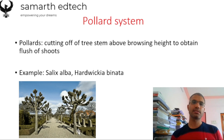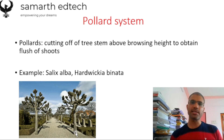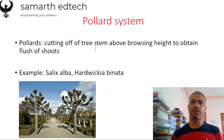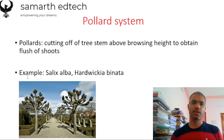The next is the Pollard System. A coppice is when a particular tree is cut down and the stump that remains is called a coppice, but the coppice height is very low so animals can graze the new shoots. However, in the Pollard System the cutting height is very much higher so that animals cannot eat the new shoots. It involves cutting the tree stem above the browsing height — the height where an animal cannot eat the particular shoot — so as to obtain a flush of shoots. Examples are Salix alba and Hardwickia binata.